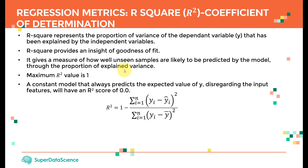R-square represents the proportion of variance of the dependent variable Y that has been explained by the independent variable X. R-square provides an insight of the goodness of fit — how good is my fit. It also gives a measure of how well unseen samples are likely to be predicted by the model through the proportion of explained variance.